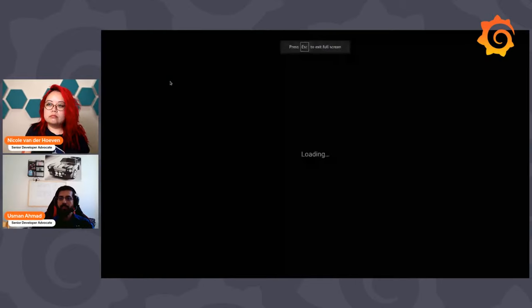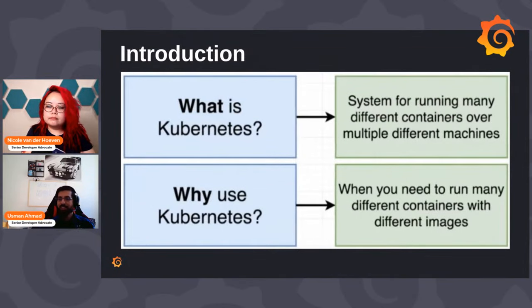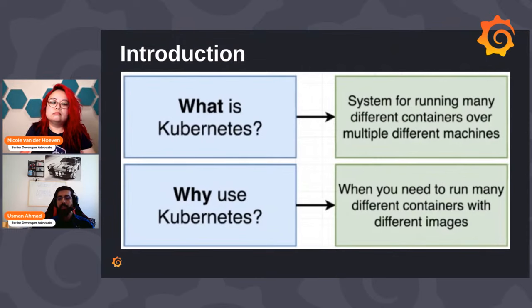Let me share a slide. So this is the presentation I created: how to run Grafana on Kubernetes. What is Kubernetes? In short, Kubernetes is a system to run multiple containers on different machines. Why do we use Kubernetes? When you need to run many different containers with different images, it's more appropriate to use Kubernetes instead of Docker.